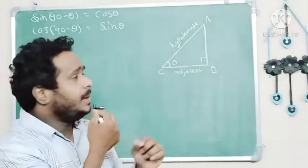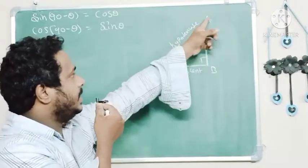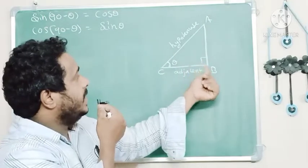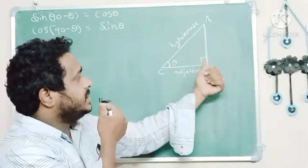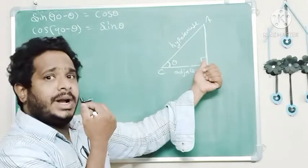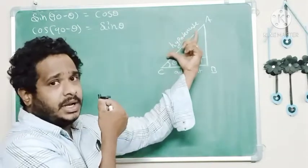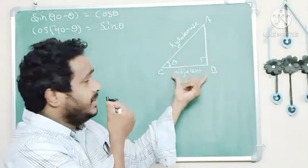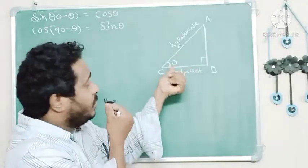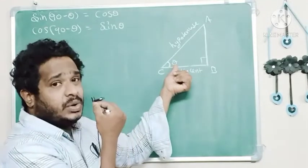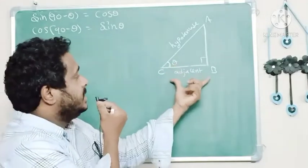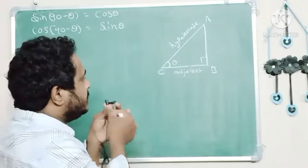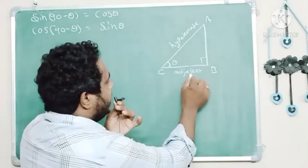Take a right triangle ABC. We know that the side which is opposite to 90 degrees is known as hypotenuse, and the side which is adjacent to theta, where theta is an angle of the triangle, is known as the adjacent side.